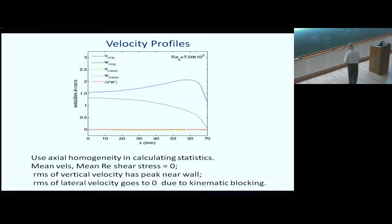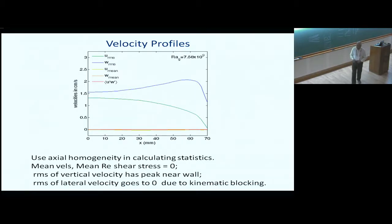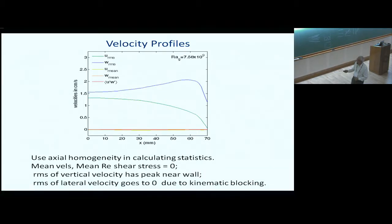At later times in the mixing zone, it is again the density gradient which is driving the flow. At the wall itself you have zero flow, and the mean flow itself is zero — so it is zero mean flow turbulence next to a wall. That is an important fundamental problem.